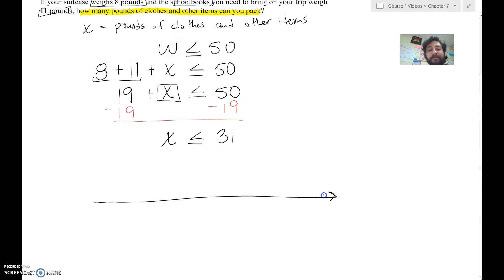So if we wanted to graph this on a number line, what we're going to do is we're going to find our point, our boundary point, and that is at 31. I'm just going to say that's where it is. Here's 0. Technically, we need at least 0 or more. We can't have negative weight. So if you want to put that, you can.